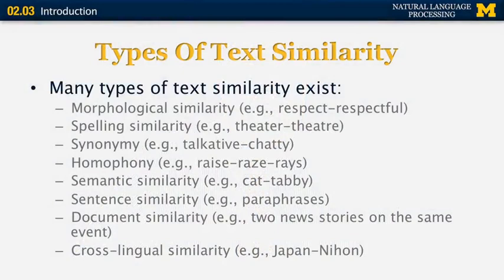Synonymy is when two words have very similar meanings. It's very rare for two words to have exactly the same meaning, but it is usually enough for them to be close enough to be considered synonyms — so 'talkative' and 'chatty' are synonyms. Another category is homophony, when multiple words have possibly different meanings but the same pronunciation: RAISE (R-A-I-S-E), RAZE (R-A-Z-E), and RAYS (R-A-Y-S) are all pronounced the same way. We can also have different kinds of semantic similarity — for example, 'cat' and 'tabby' are semantically related because 'tabby' refers to a specific kind of cat.